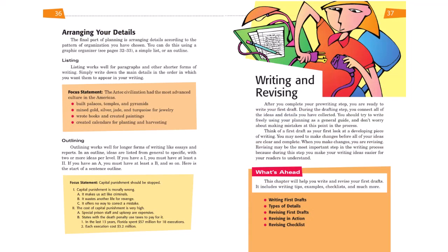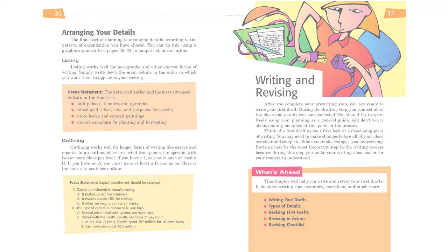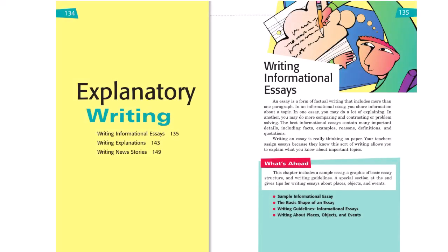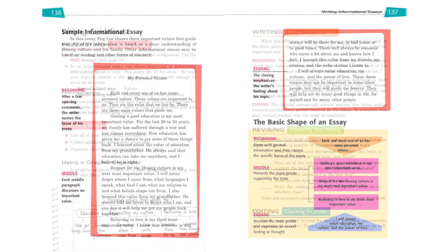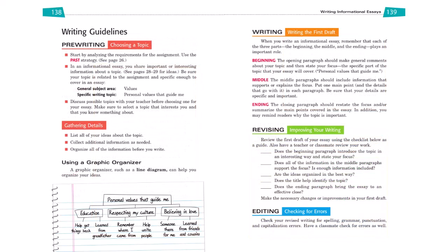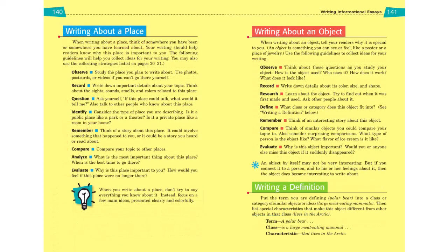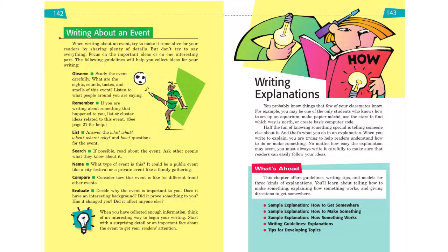The chapter that follows addresses skills for writing and revising. Now let's take a look at the forms section with this chapter on writing informational essays. Students receive an introduction, read a sample informational essay, use a diagram to think about the structure of the essay, and then follow guidelines to create an essay of their own — choosing a topic, gathering details, writing the first draft, revising, and editing. They learn about different types of informational topics: writing about a place, writing about an object, writing a definition, or writing about an event.